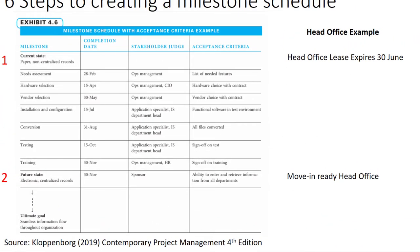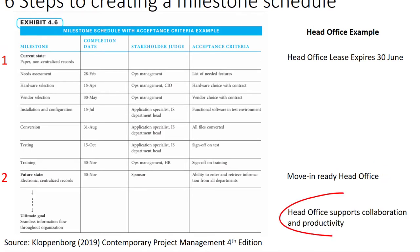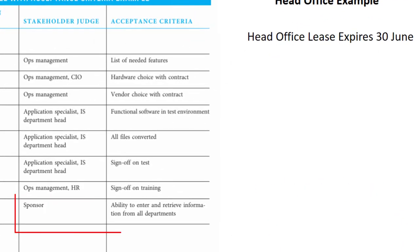In our second example, we have a move-in ready head office, and the head office supports collaboration and productivity. Then describe the acceptance criteria for the final project deliverables. The acceptance criteria signifies that this milestone can be signed off by the stakeholder judge, so it should be specific and easy to recognise.